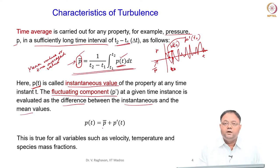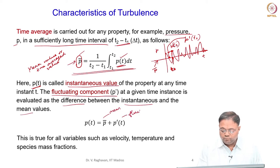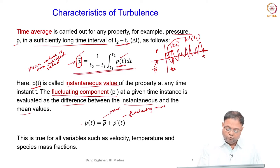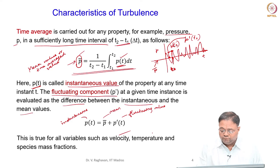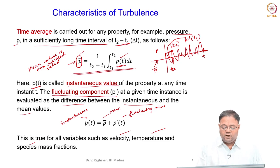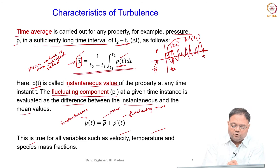The fluctuating quantity p′(t) is defined as: p(t) = P-bar + p′(t), where p(t) is the instantaneous value, P-bar is the mean value, and p′ is the fluctuating component. Variables like velocity components, pressure, temperature, species mass fractions, and even reaction rates all undergo such fluctuations. There are two types of averaging: time averaging and Favre averaging.